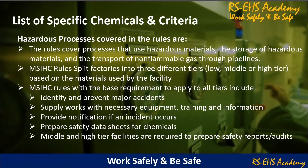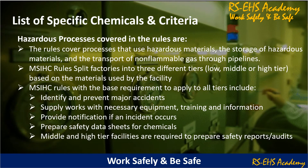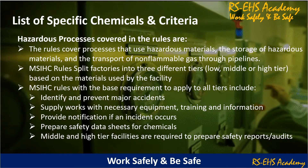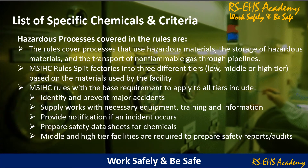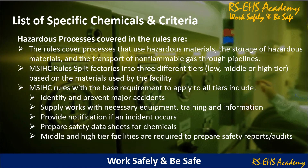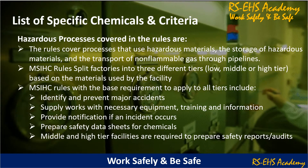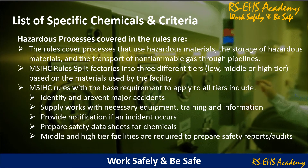MSIHC Rules split factories into 3 different tiers — low, middle, or high tier — based on the material used by the facility. The base requirements that apply to all tiers include: identify and prevent major accidents, supply workers with necessary equipment, training and information, provide notification if an incident occurs, and prepare safety data sheets for chemicals. Middle and high tier facilities are also required to prepare safety reports and audit reports.